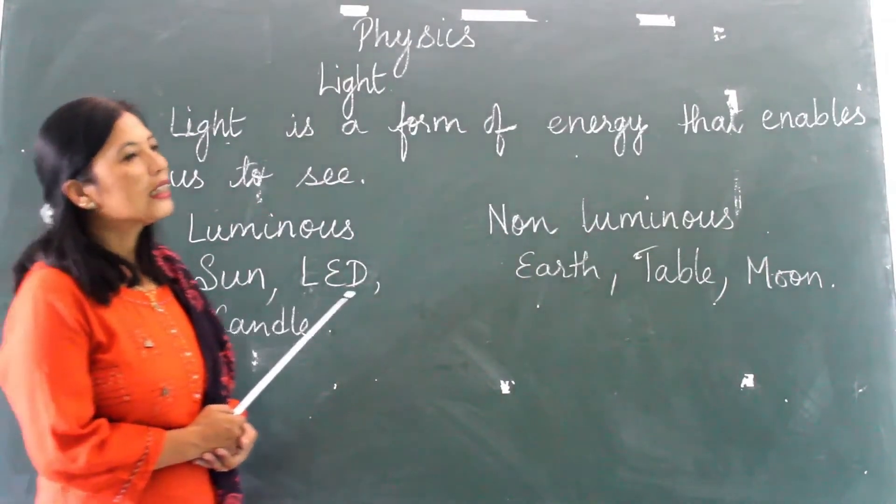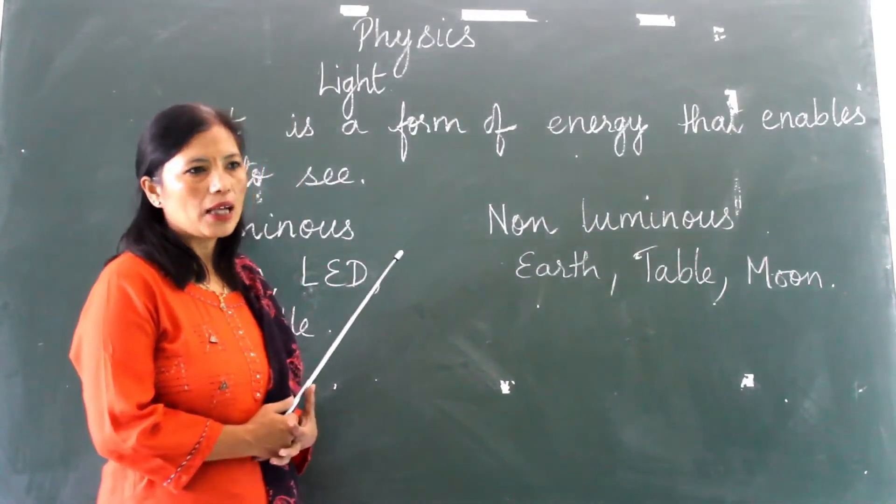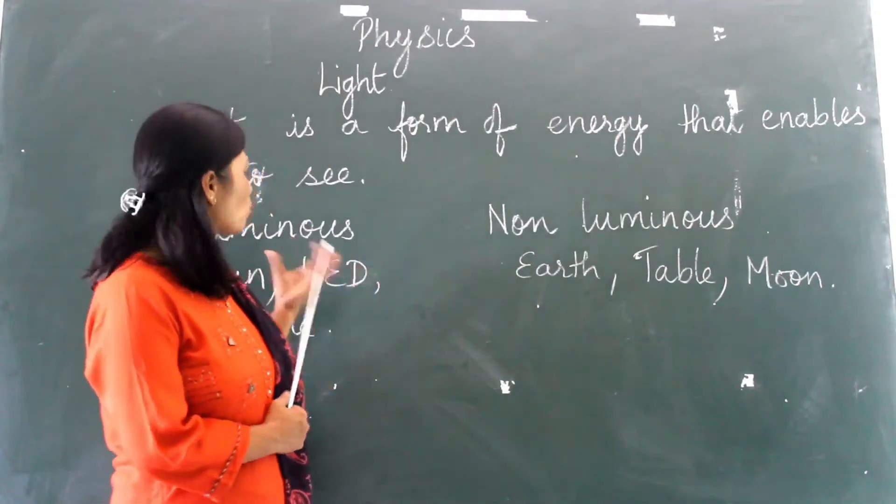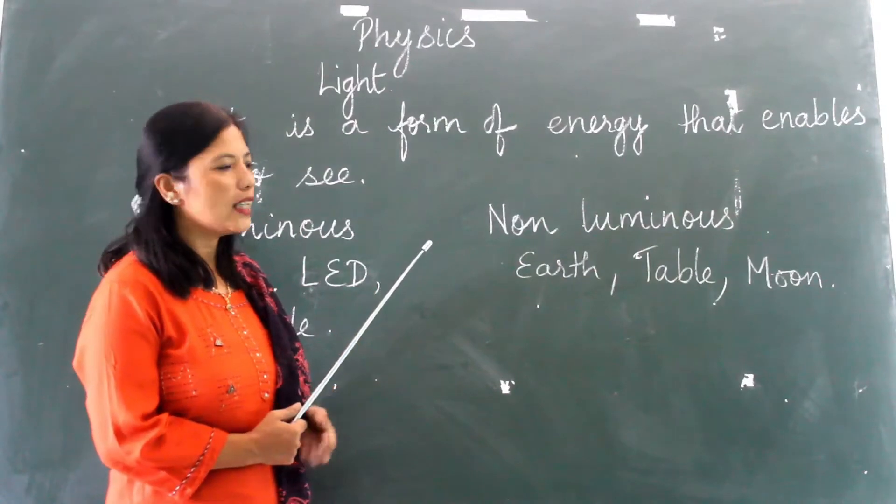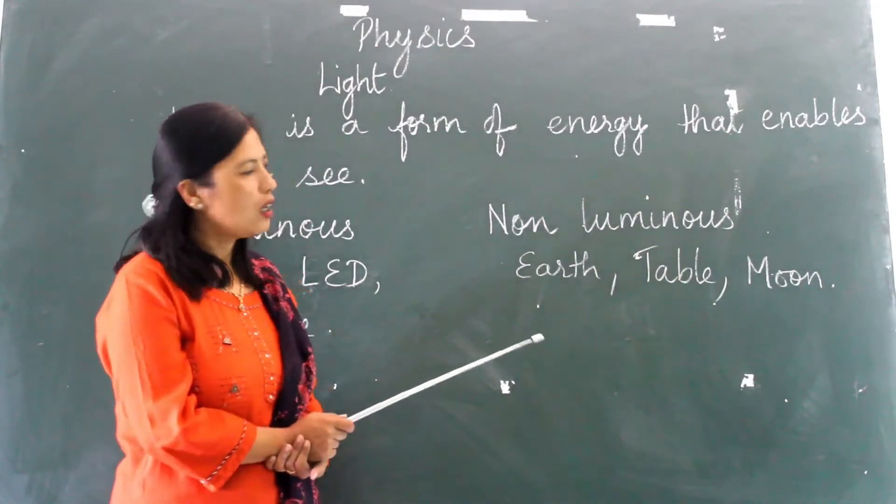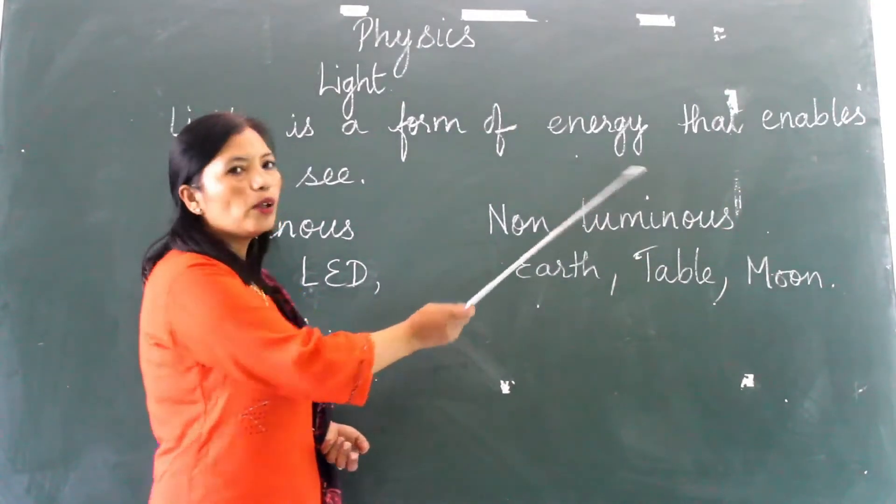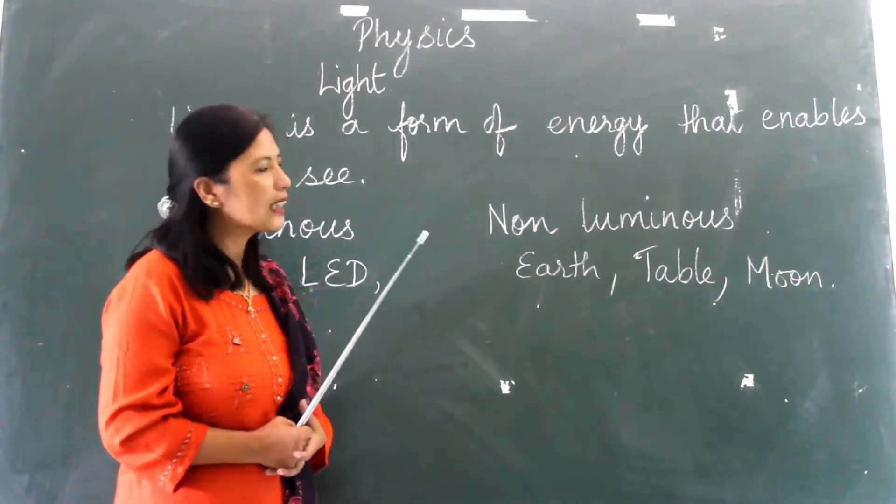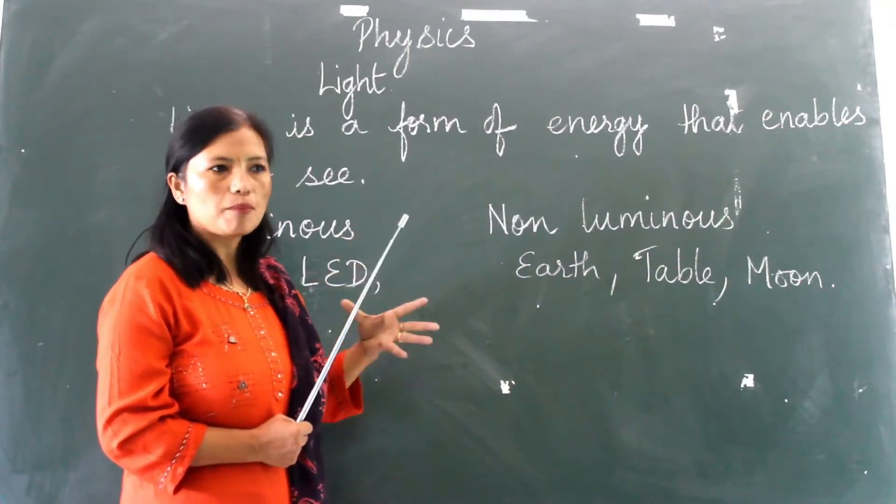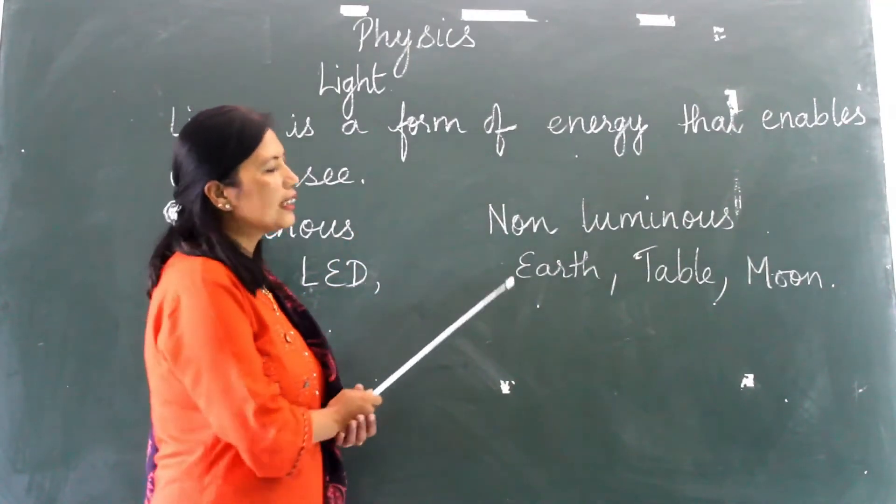Whereas the objects which do not have their own light but reflect the light from a source and then we can see them, those are known as non-luminous objects. For example, Earth, table, Moon—all these are non-luminous. Means they take the light from something else and then they reflect it back so that we can see them.